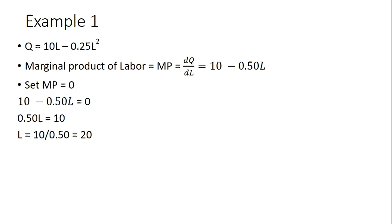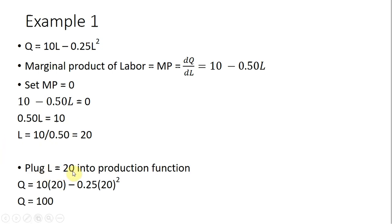When L equals 20, output should be maximized. What value is that output? Take this L equals 20, plug it into the production function, gives us 10 times 20 minus 0.25 times 20 squared, and this will just simplify to 100.